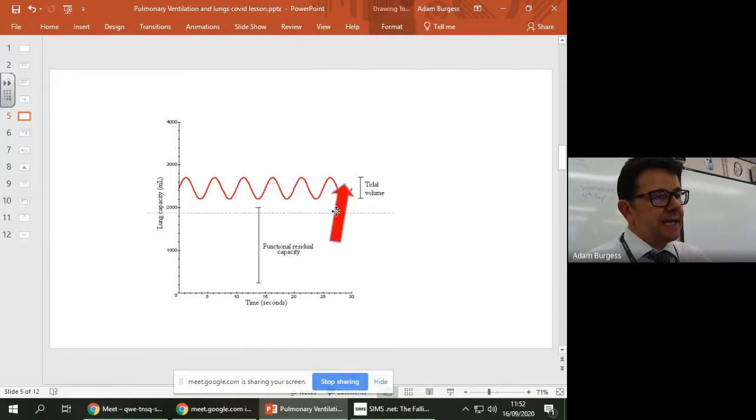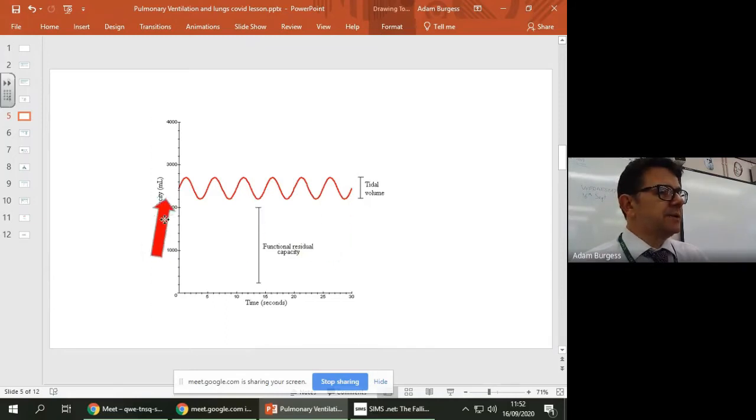Here on the x-axis you can see time in seconds, all right, and here you can see breathing in, so when you breathe in it goes up, breathing out goes down, breathe up, breathe down. And you can work out something called the tidal volume, so the tidal volume is the maximum breath minus the, sorry, it's breathing in minus breathing out basically.